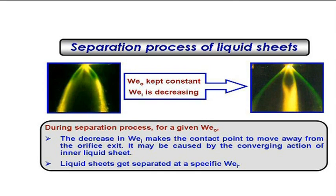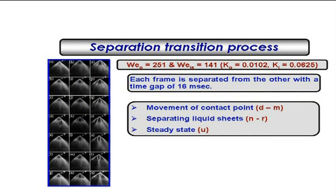The same thing should happen when you try to reduce the flow rate — when you reduce the inner flow rate — and the spray goes back from the merged state to the separated state. At some critical condition, they separate. Looking at the sequence, there is a separation transition process: somewhere the merged spray separates, and it is as though the two liquid sheets are peeled apart from one another. Finally you have the inner spray separate. This transition is quite interesting.